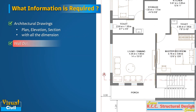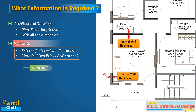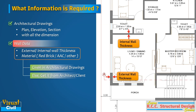Next, we require the wall data. This includes the thickness and material used for the external and internal walls. Generally, this data is given in architectural drawings; if not given, then get it from the architect or client. This data is required in the calculation of wall load.